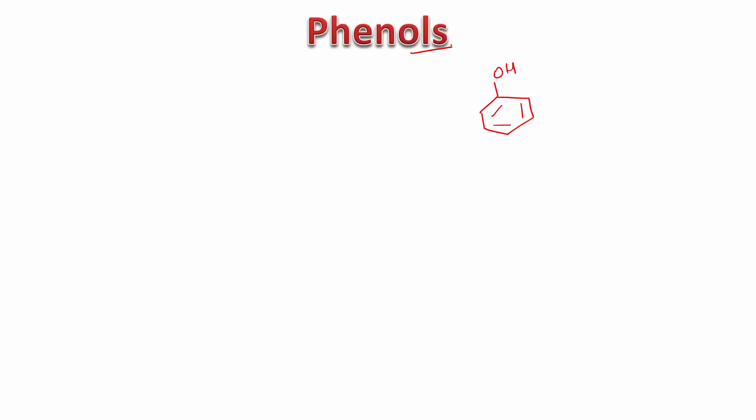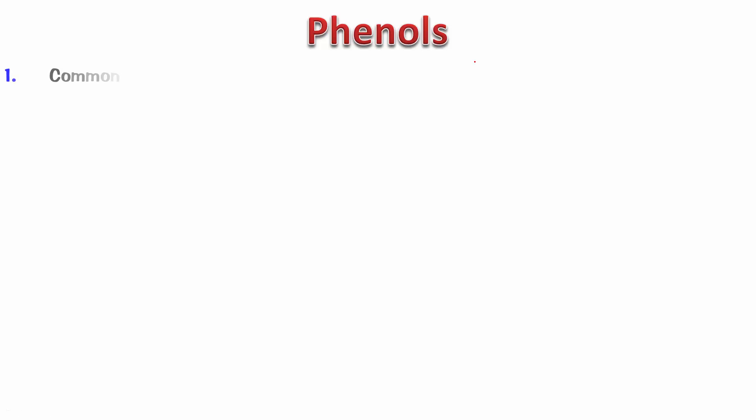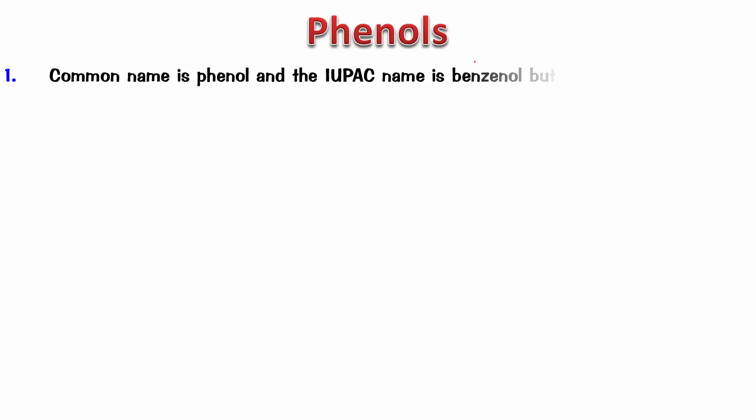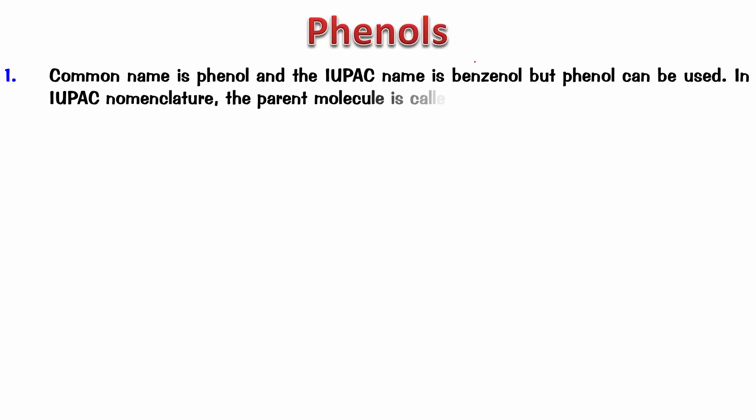That's why it ends in '-ol'. We are talking about phenol and phenol derivatives. The common name is phenol, and that is accepted in the IUPAC system, even though technically we call it benzenol. When numbering, the carbon containing the OH group gets the first position.